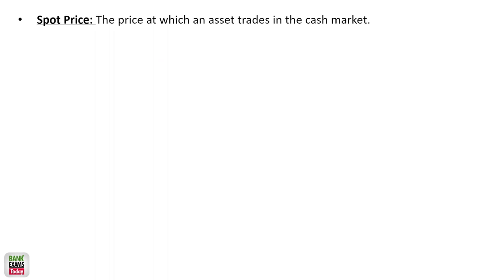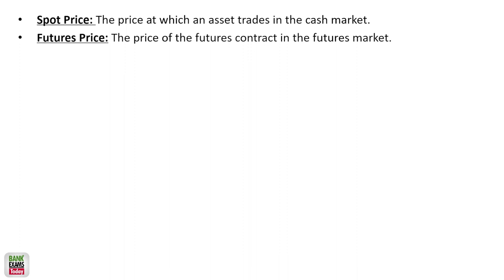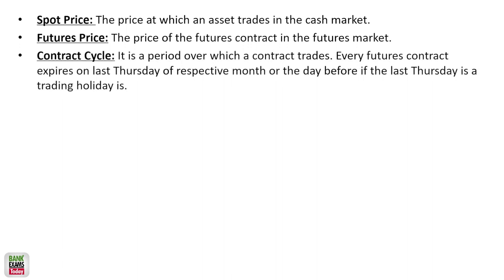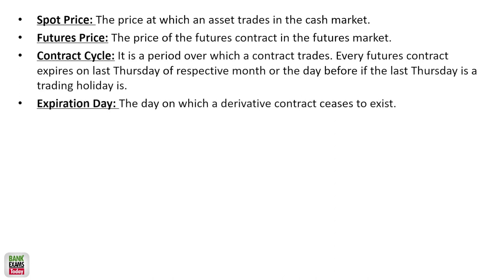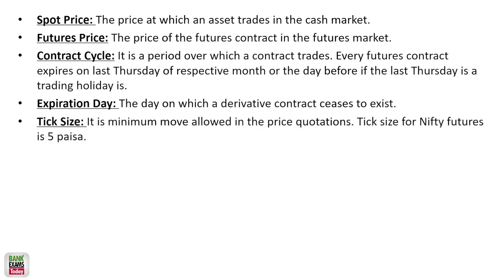Key terminology: the spot price is the price at which a security trades in the cash market. The future price is the price of future contracts in the futures market — one month or two month future prices are available. The contract cycle is the period over which a contract trades, generally one month. Every futures contract expires on the last Thursday of the respective month — or a day before if it is a trading holiday. Tick size is the minimum price move allowed, generally five paisa for Nifty futures.